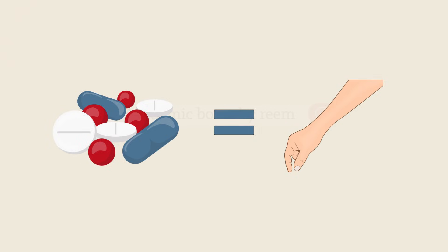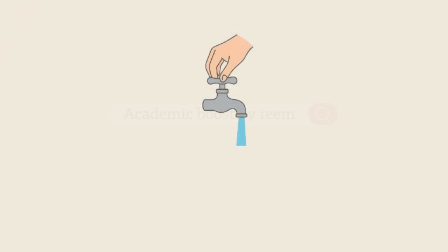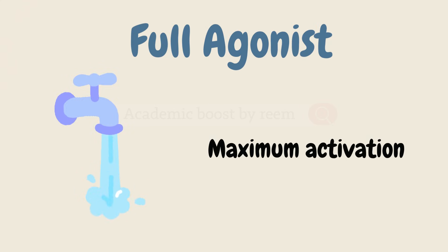Consider the faucet as our receptor and the drug is the hand turning it. When the faucet is turned all the way on, water flows at full strength. This is like a full agonist - it gives maximum activation and maximum response.